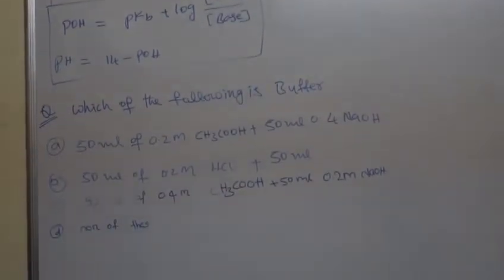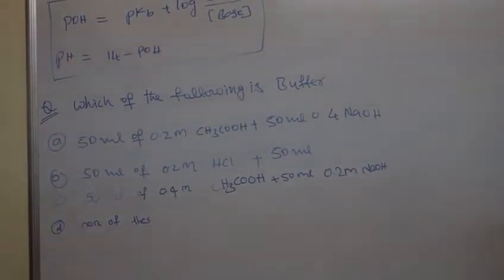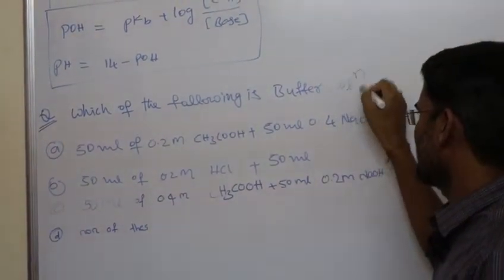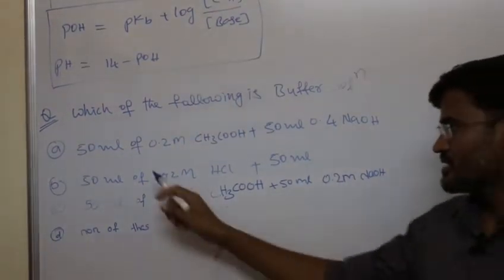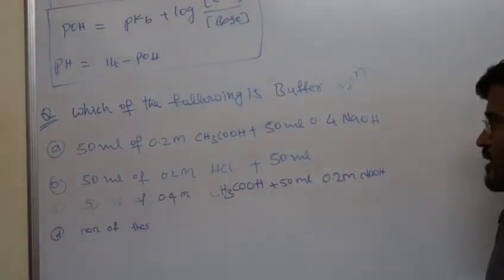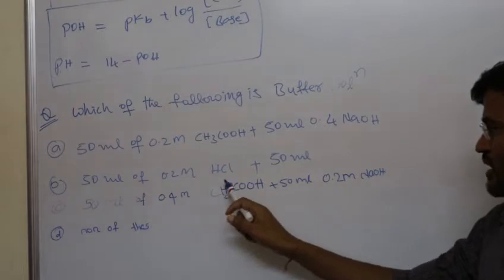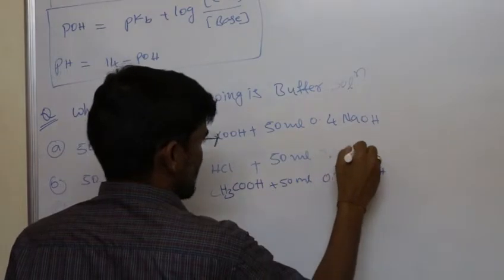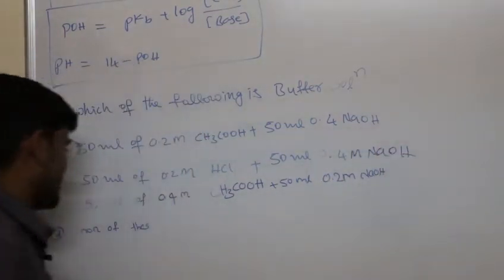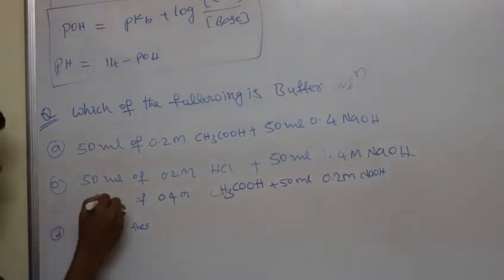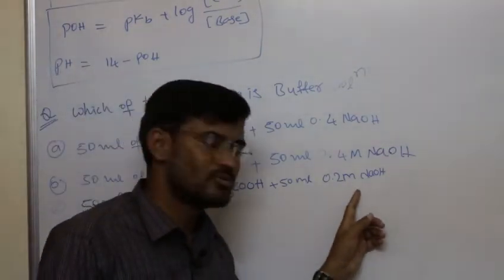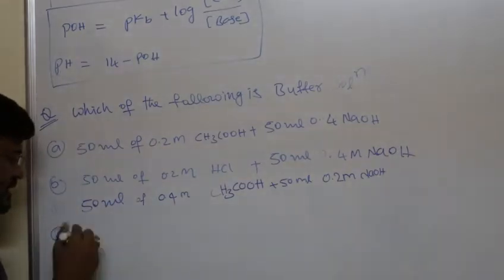Let's take a question to identify acidic and basic buffer solutions and calculate their pH. Question: which of the following is a buffer solution? Option A: 50 ml of 0.2 molar acetic acid plus 50 ml of 0.4 molar NaOH. Option B: 50 ml of 0.2 molar HCl plus 50 ml of 0.4 molar NaOH. Option C: 50 ml of 0.4 molar acetic acid plus 50 ml of 0.2 molar NaOH. Option D: none of the above.